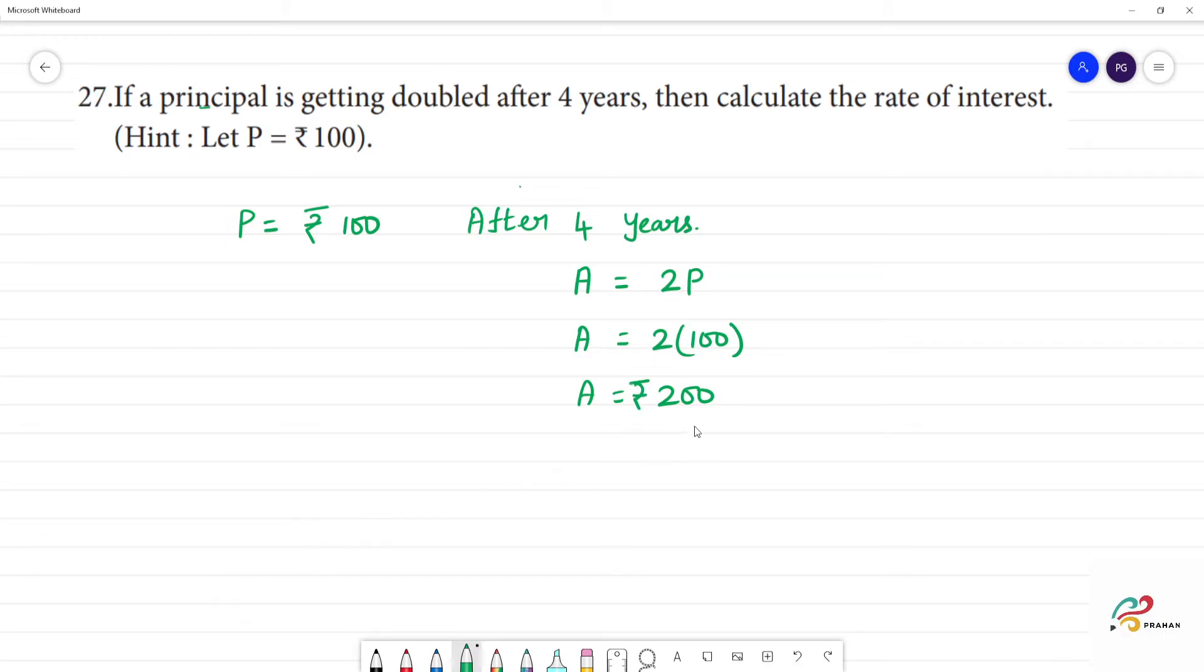Now, we calculate the rate of interest. Now, we understand the principal. Interest is equal to amount minus principal. Amount is equal to 200 rupees. Principal is equal to 100 rupees. Interest is equal to 200 minus 100 is 100 rupees.